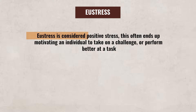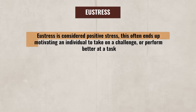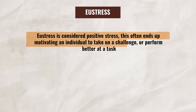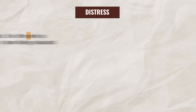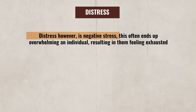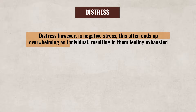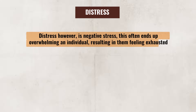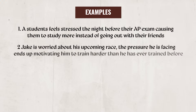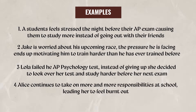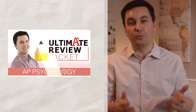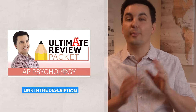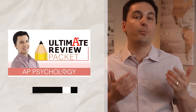Eustress is considered positive stress. This often ends up motivating an individual to take on a challenge or perform better at a task. Distress, however, is negative stress — this often overwhelms an individual, resulting in them feeling exhausted. Take a minute and try to identify which examples are eustress and which are distress. When you are done, you can check the comment section below for the answers. If you are struggling, you can head on over to my Ultimate Review Packet for more practice.